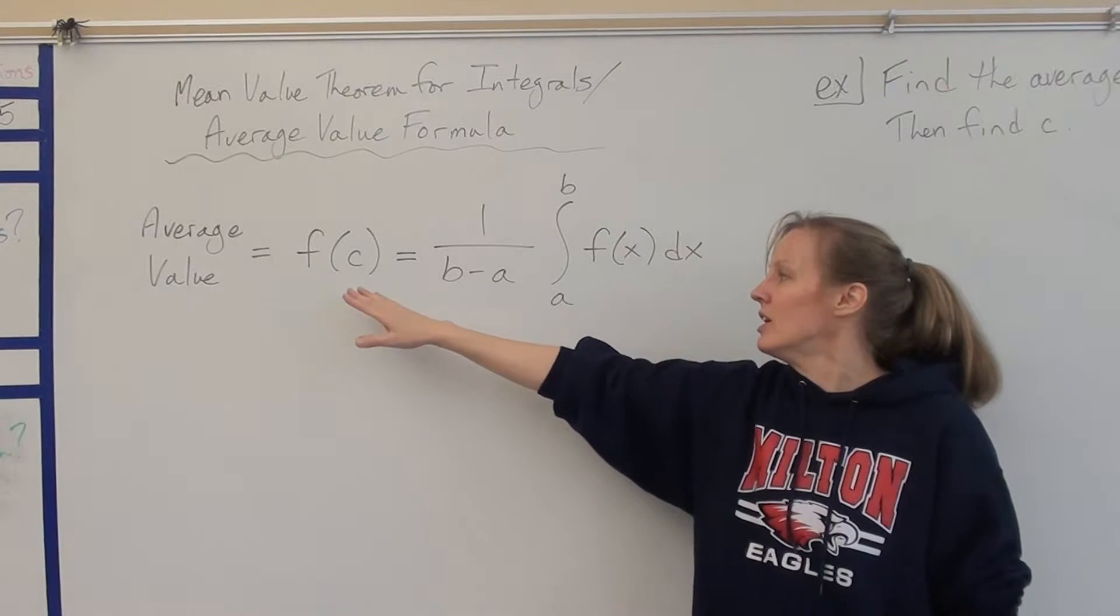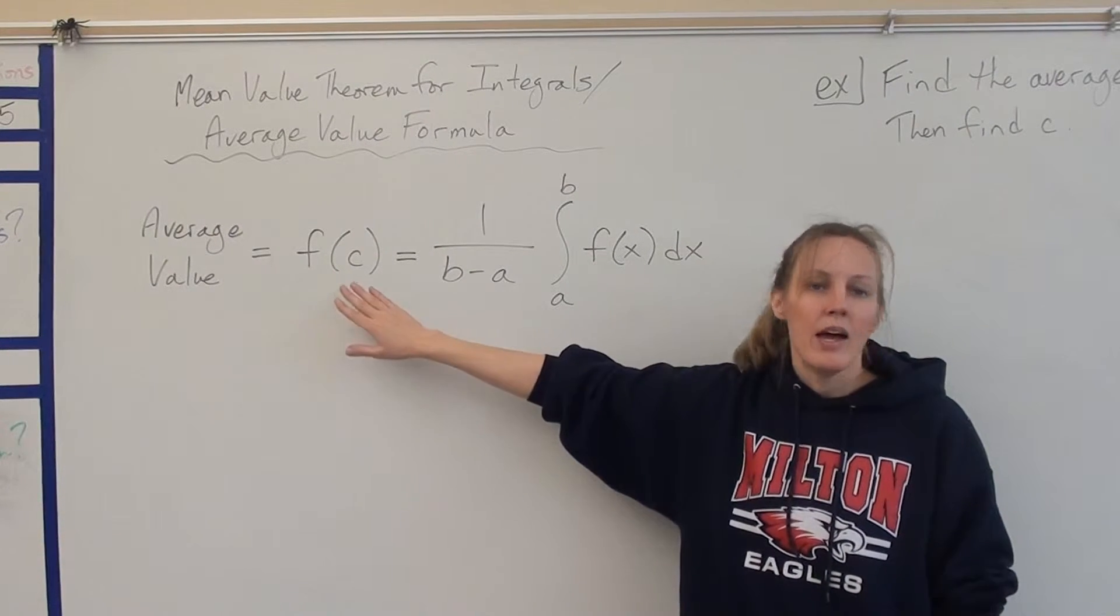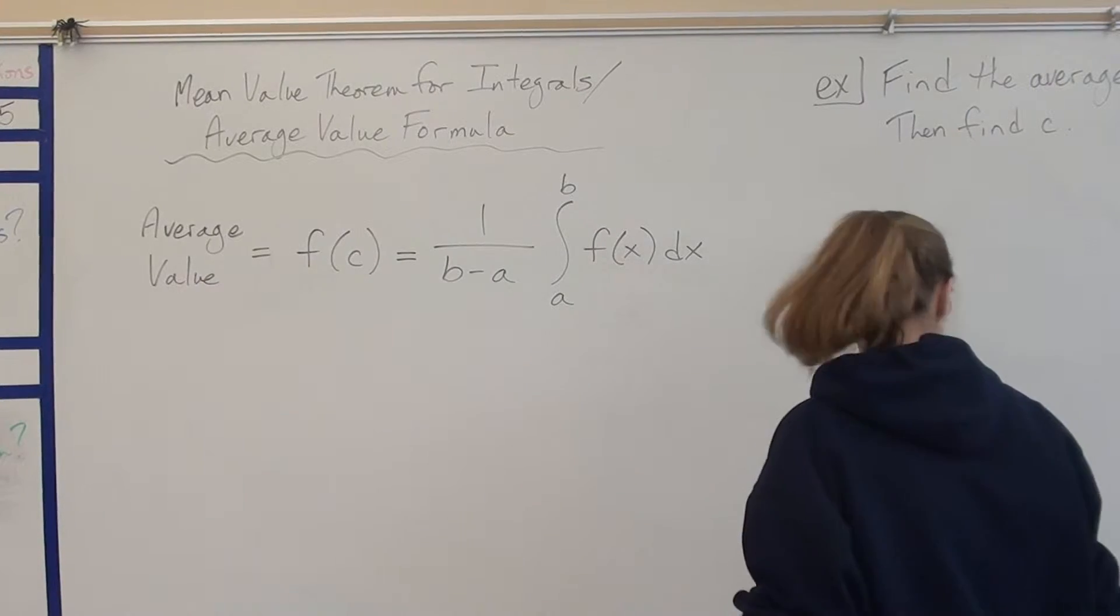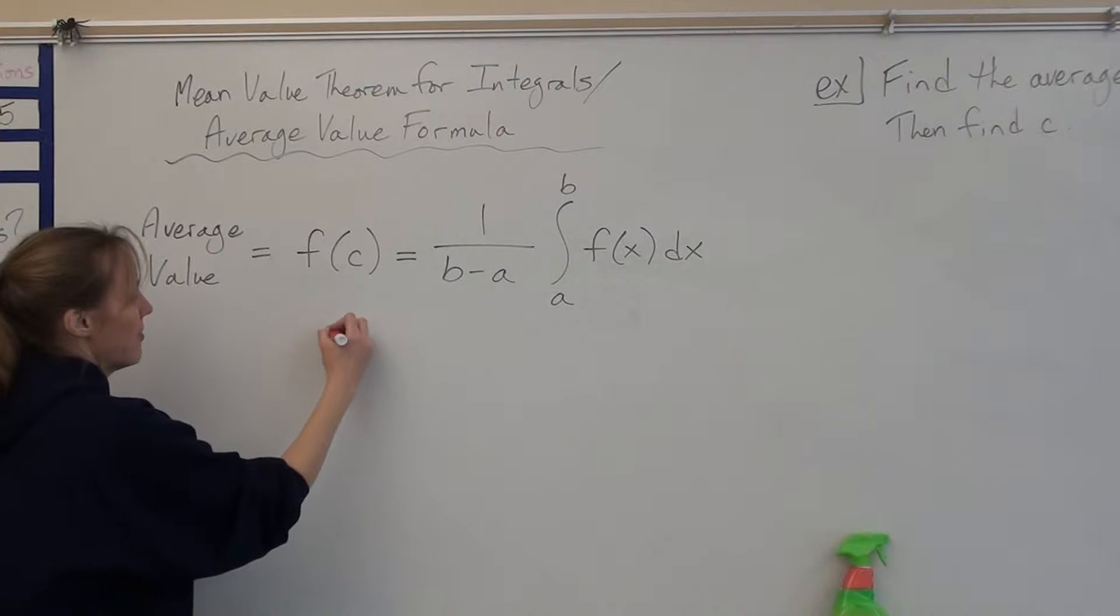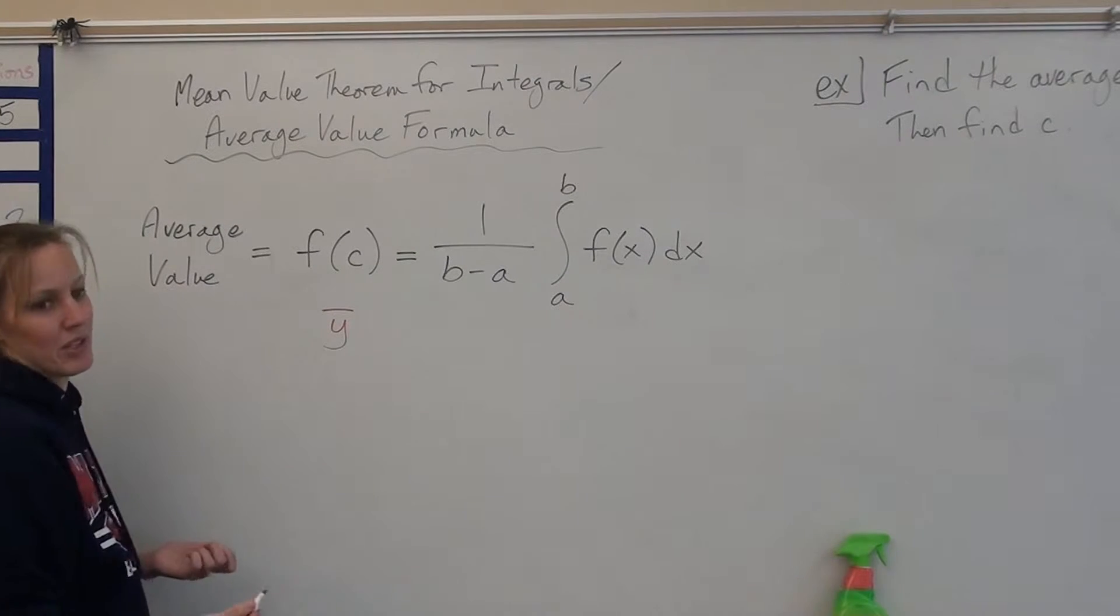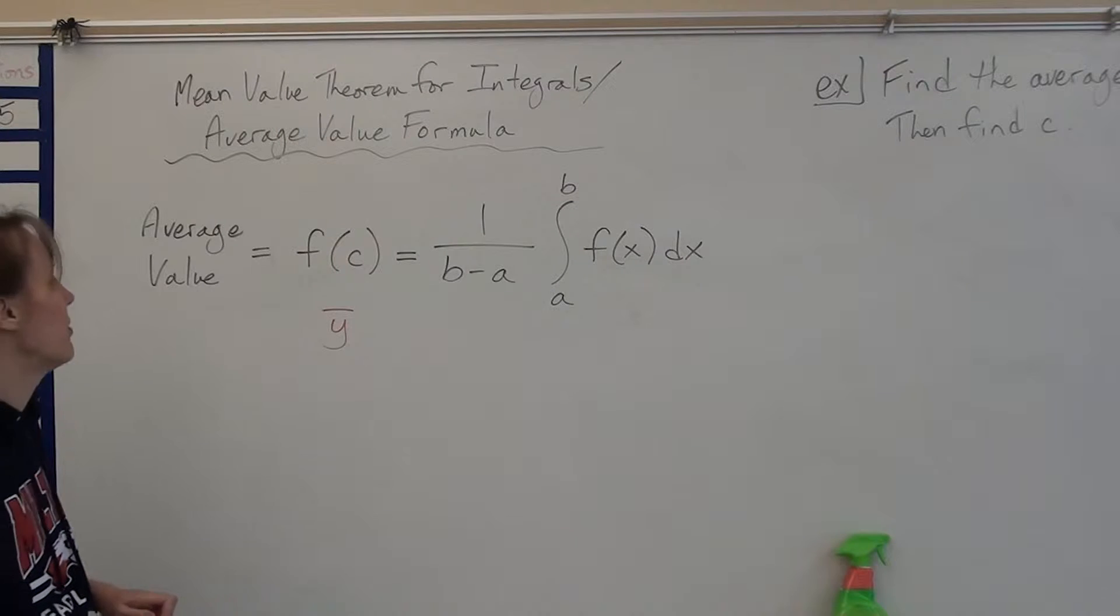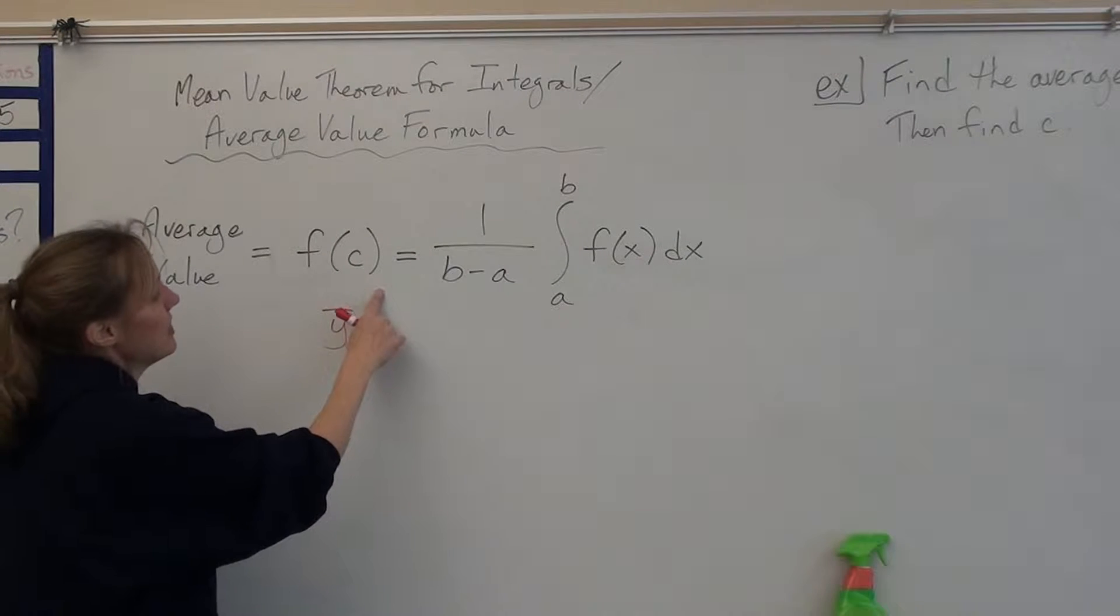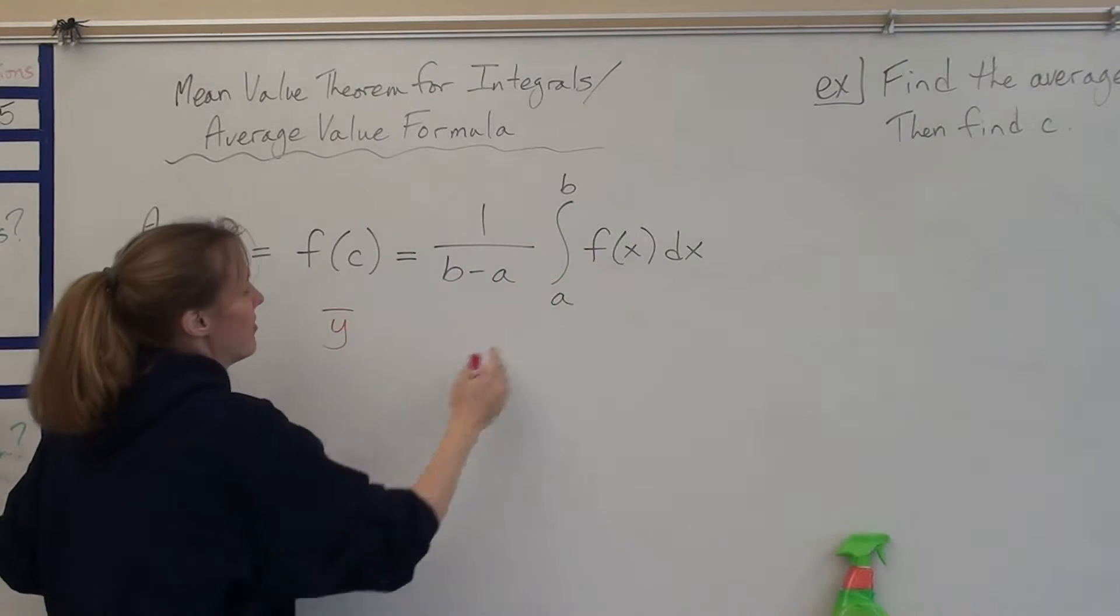So here's what it says. Your average value, which your book calls f of c - when I was growing up, and actually I think in college too, I called it y bar. It was called y with a bar over the top when I was a kid. But your book calls it f of c. It says f of c equals 1 over b minus a times the integral from a to b of f of x dx.